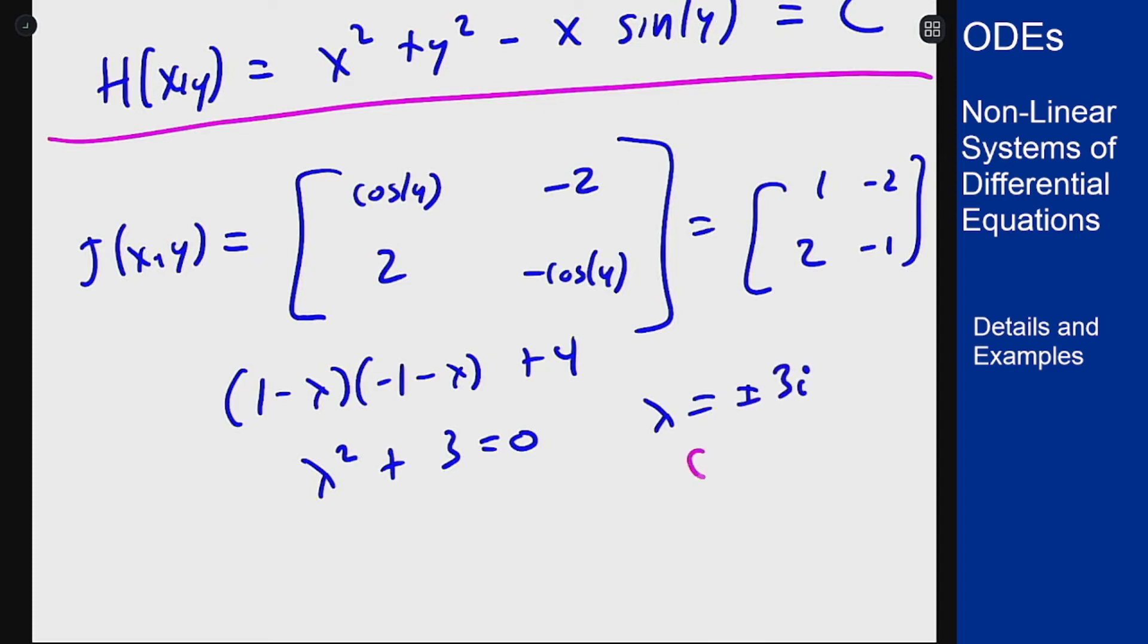This is a center, so it's stable, but that means I don't know anything about what's going to happen to the non-linear version because it could be anything because I know what happens from the center. However, because it's Hamiltonian, I know I can't have sources or sinks. That's a property of Hamiltonian systems, but it's something that looks like a center for this as well.